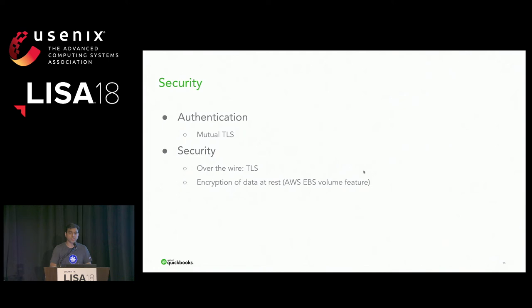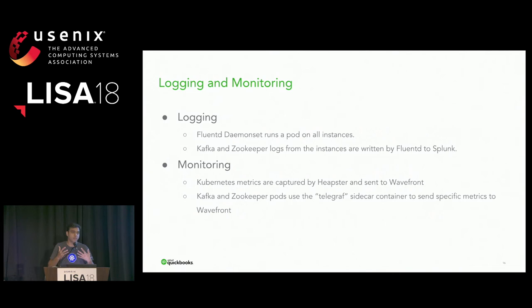For data at rest, AWS supports EBS volumes which can be encrypted. Kubernetes does a good job here — you can tell Kubernetes to give you an EBS volume with data-at-rest encryption, and it creates a key in Amazon's KMS (Key Management Service) and uses that key for encrypting data going to the EBS volume.